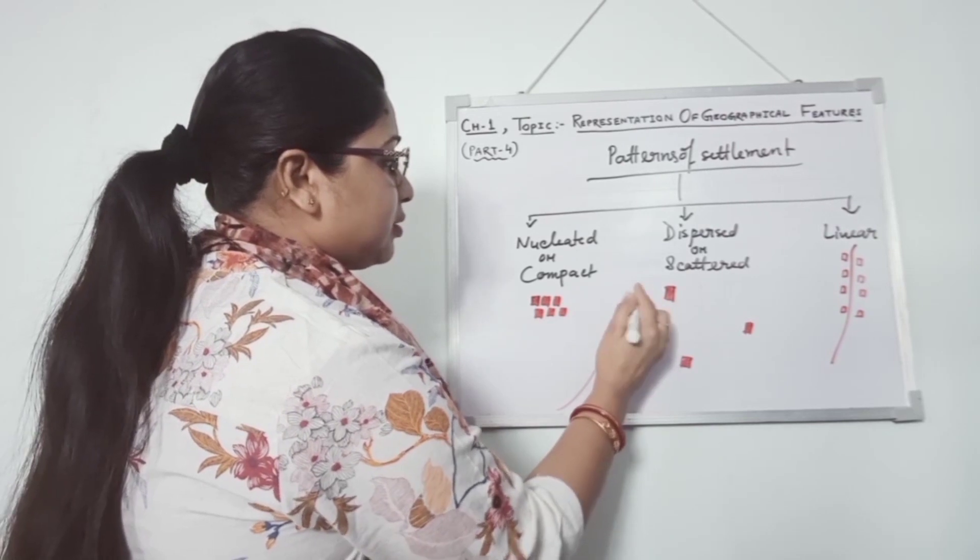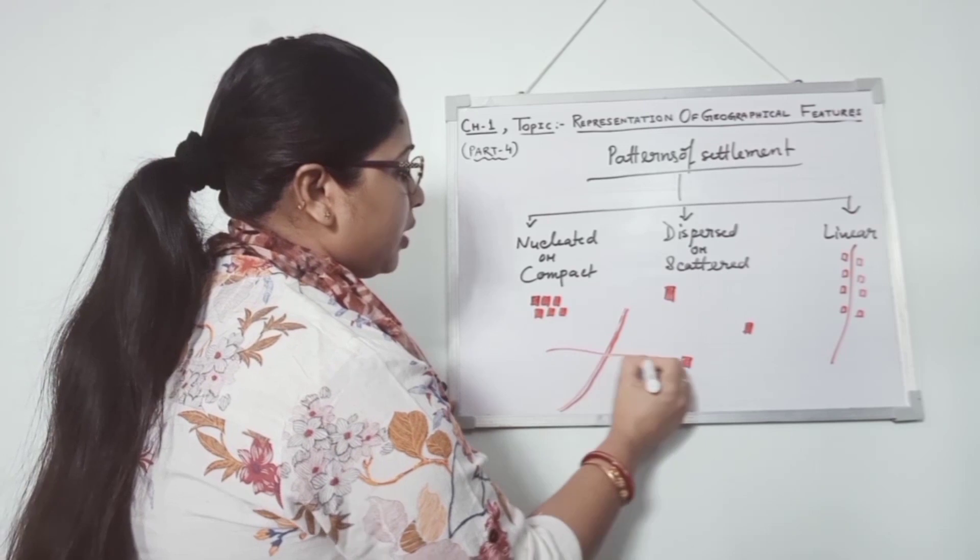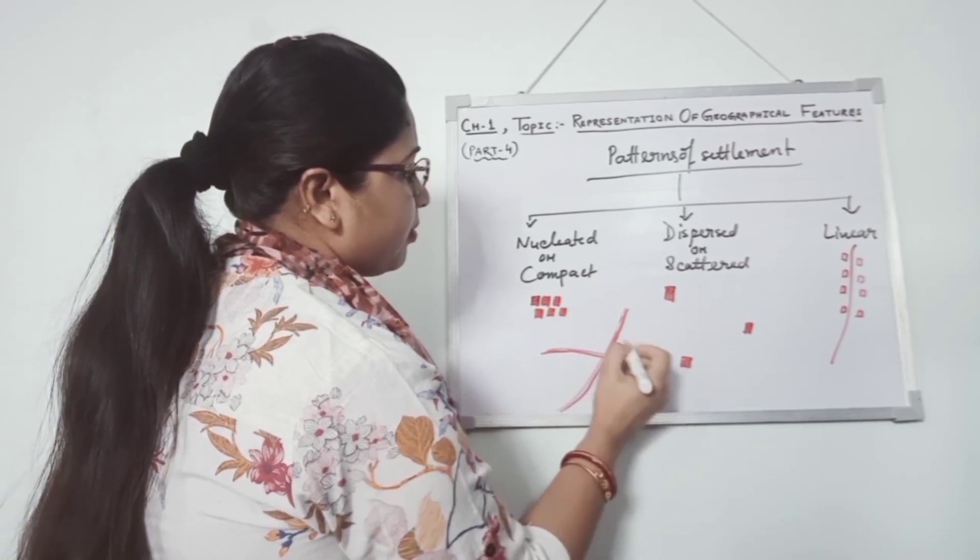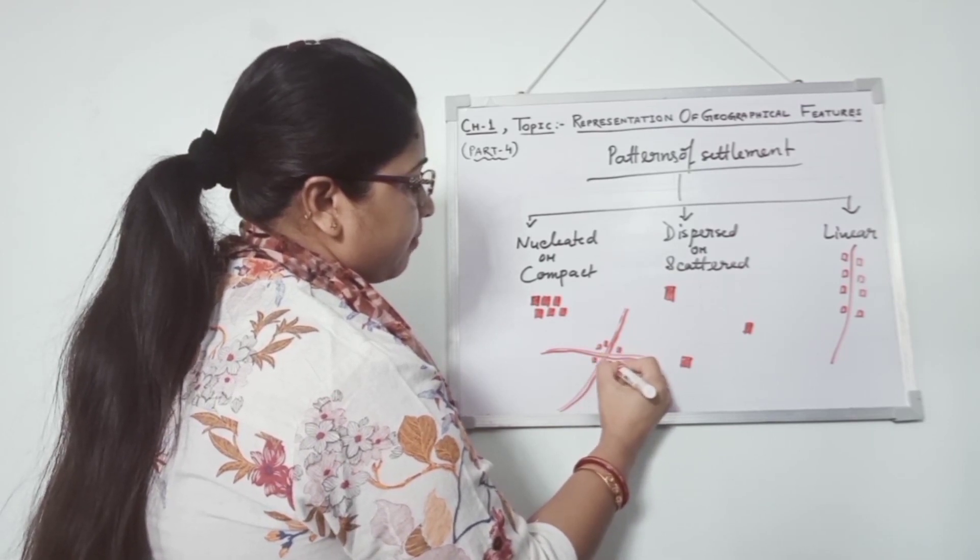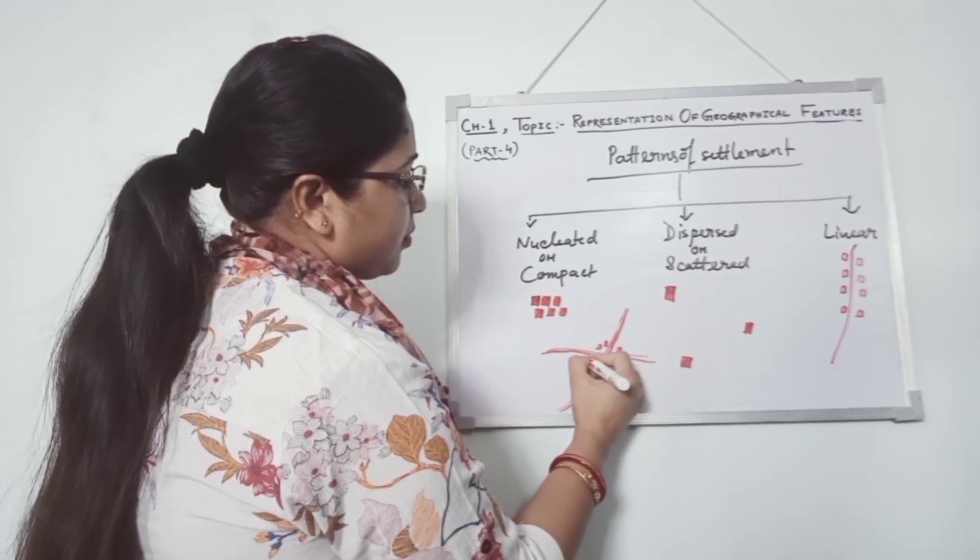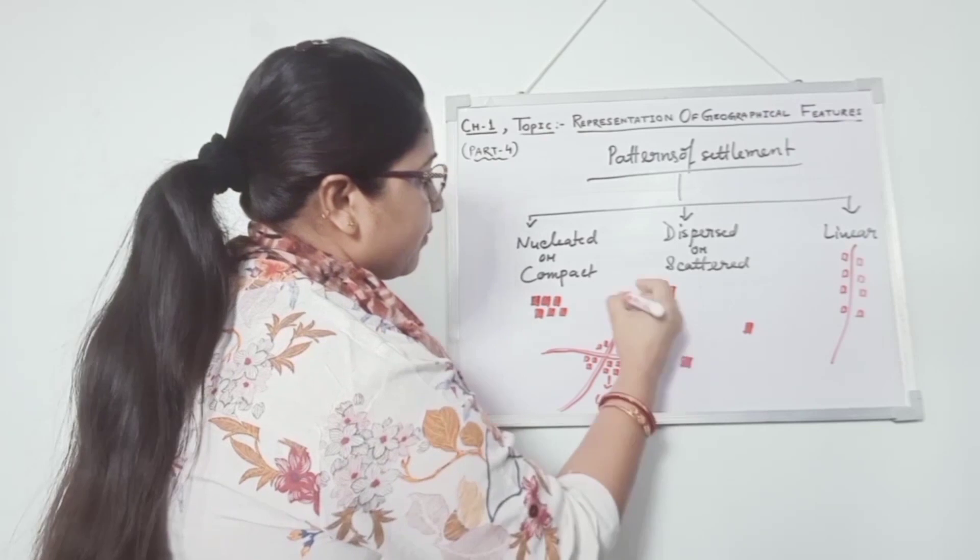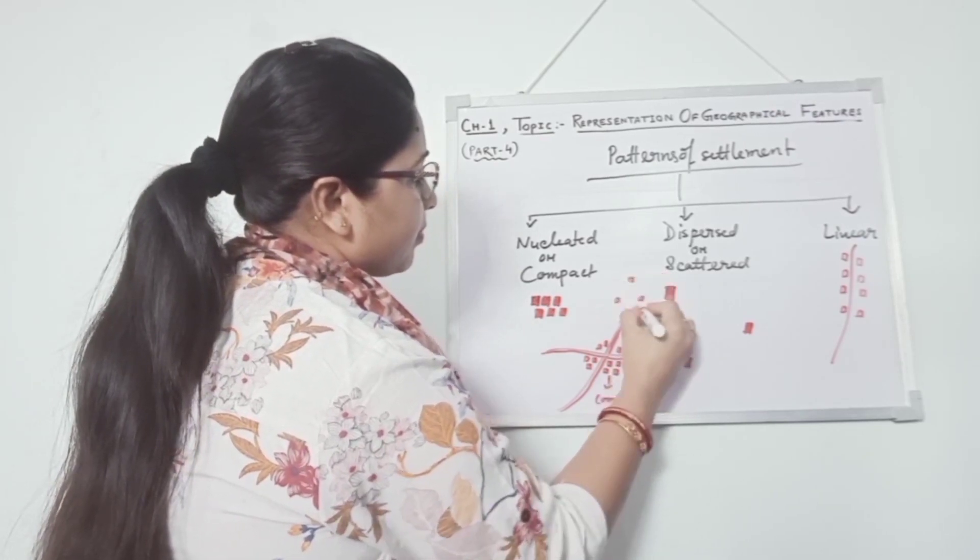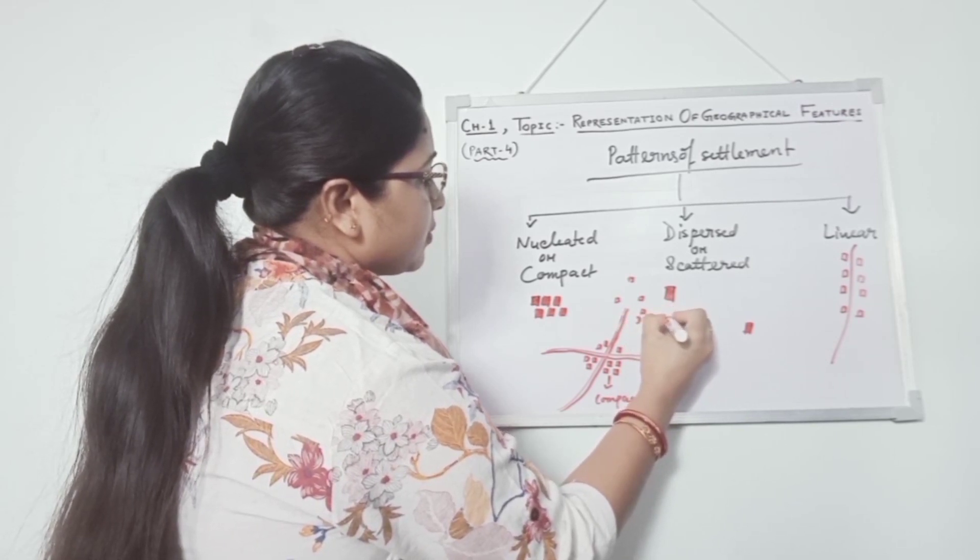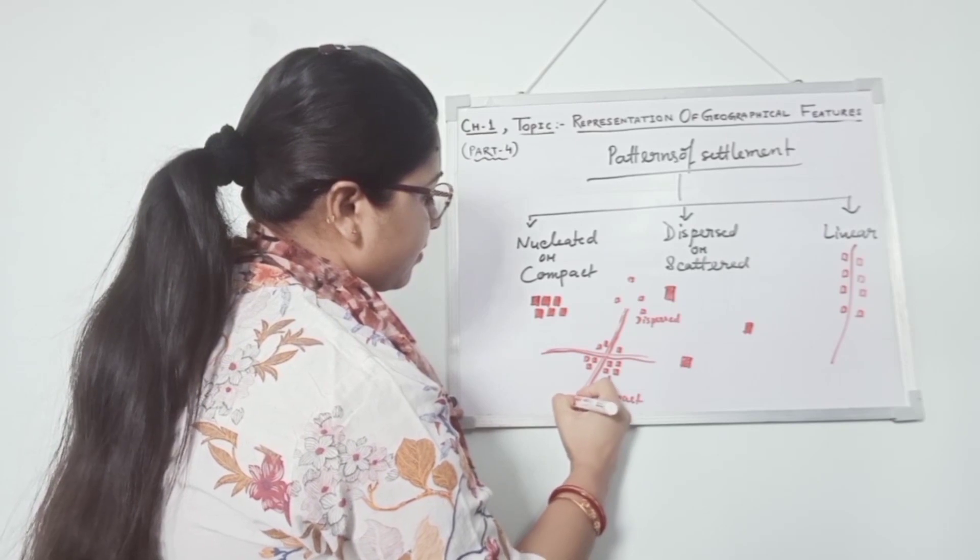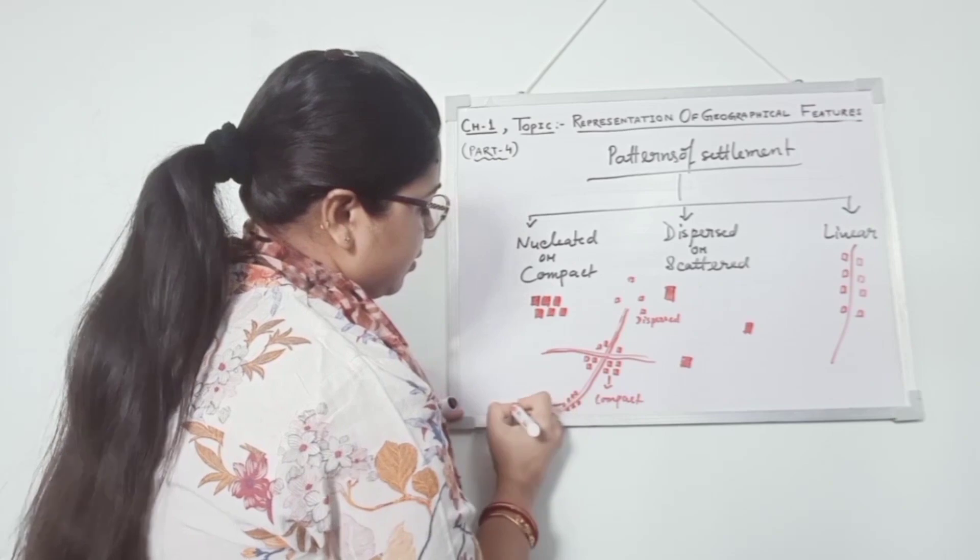If we want to show these three types of settlements or pattern of settlements, we can show this way. This is compact, this is dispersed, and this is linear.